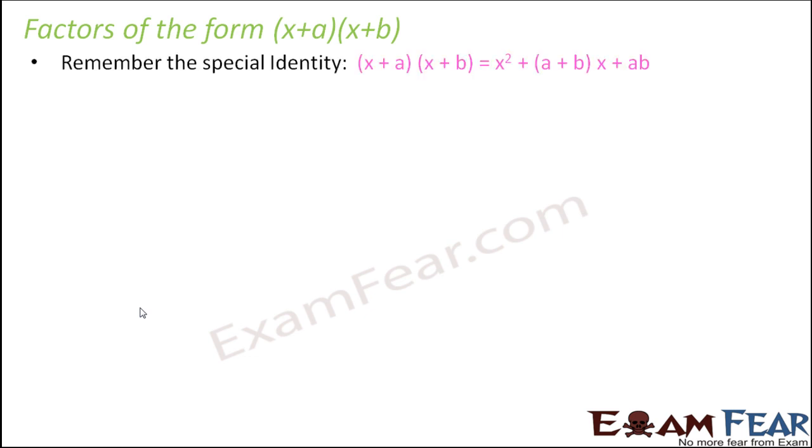So do you remember this special identity which we had learnt in algebra? That is when you have something in this format (x+a)(x+b), this is equal to x² + (a+b)x + ab. So this is the special identity that we had learnt. So now we will apply this identity. So for that, let's take an expression.